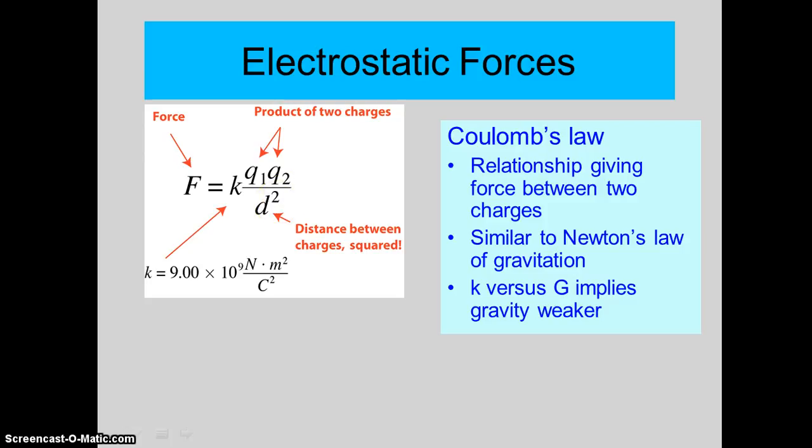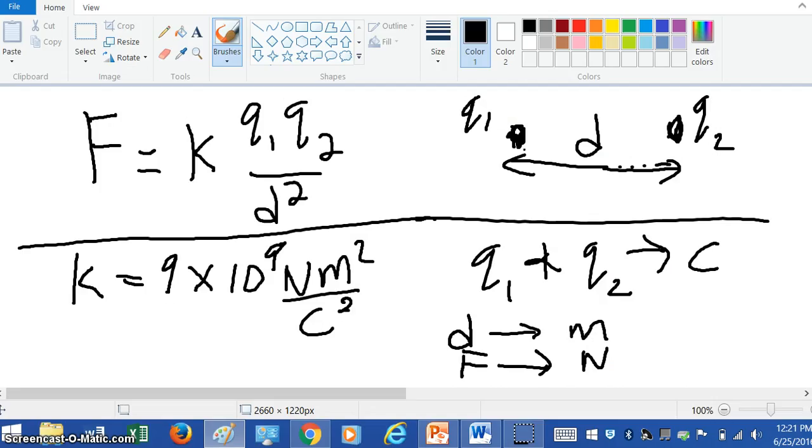So let's do a quick example. I drew a little picture over here to get a better sense of what's going on. These blobs here are two charges, Q1 and Q2 respectively, and they're a distance D apart. The force between them is given by the Coulomb equation. The force is equal to a constant K times the product of the two charges.